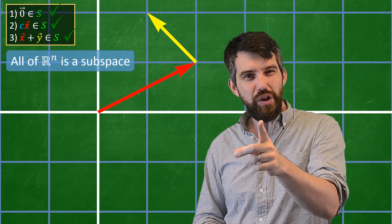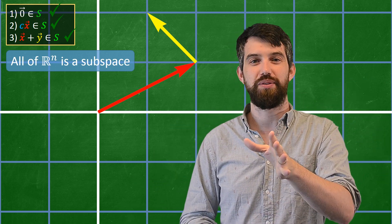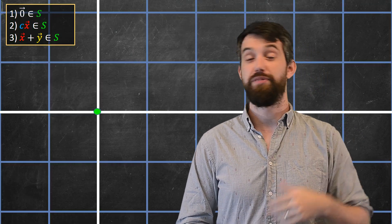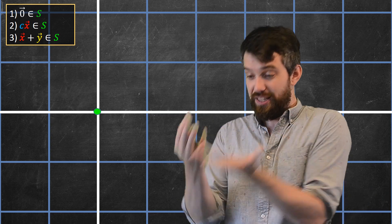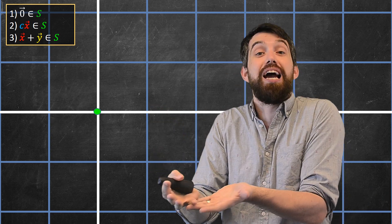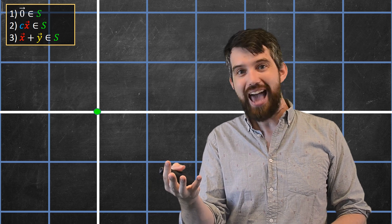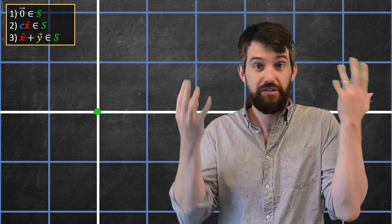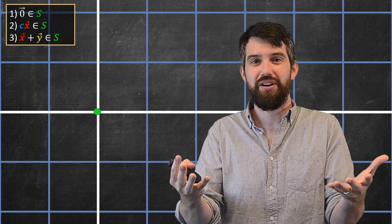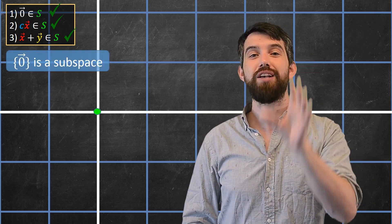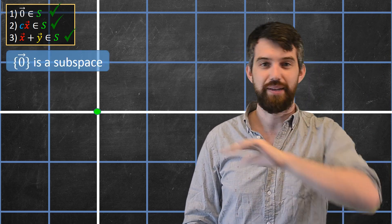The other trivial one is the one that's the smallest possible one. It's just zero. There's a green dot there right at zero. Well, the zero vector's on there. If I take the zero vector, I multiply it by two, I get the zero vector, which is by definition in there. If I do the zero vector and add another one, which can only be the zero vector, sum of two zero vectors is the zero vector. So indeed, this obeys all of my different properties, and so the set that is just the zero vector is a subspace as well.